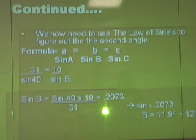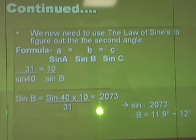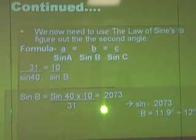And then that equals 0.2073. So then you do the inverse of sine of 0.2073, which comes out to be 11.9 degrees. If you round it out, it would give you 12 degrees.